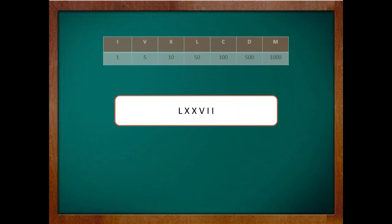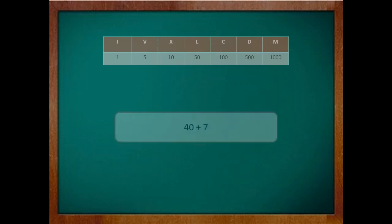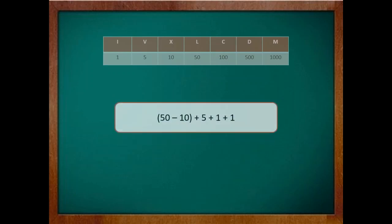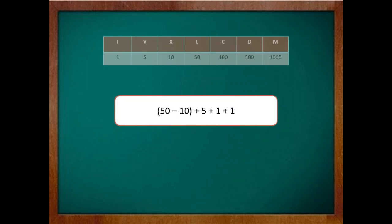Now let's take some examples which have number 4 or 9 in it. First one is 47. 47 becomes 40 plus 7 in its expanded form. Now remember the trick, every time you see 4 or 9 write it in terms of subtraction. So 40 can be written as 50 minus 10. So 47 can be written as 50 minus 10 plus 5 plus 1 plus 1.